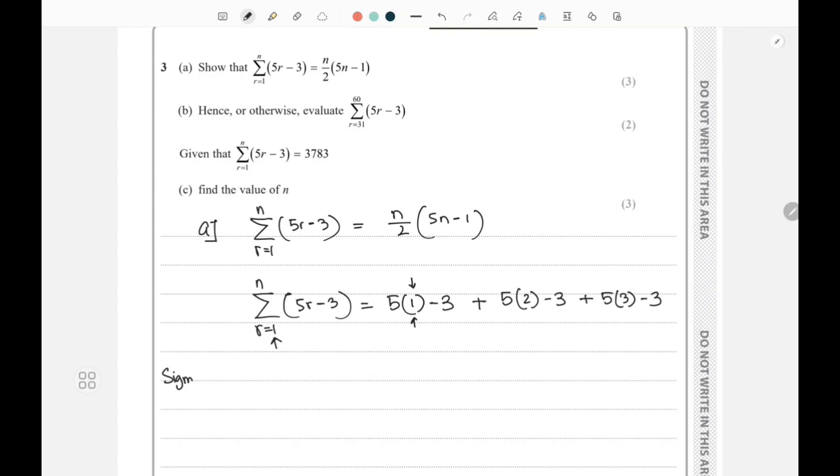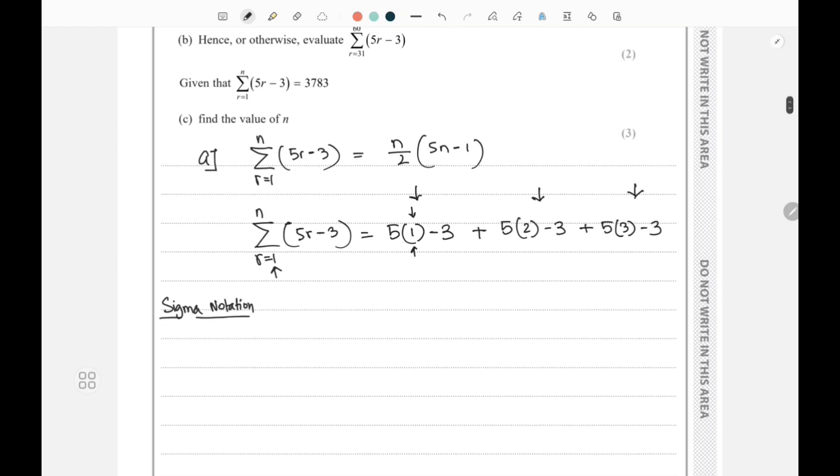The best part of sigma notation is that the terms it gives follow an arithmetic progression. Let me write out the values: 5(1) - 3 equals 2, plus 10 - 3 equals 7, plus 15 - 3 equals 12.